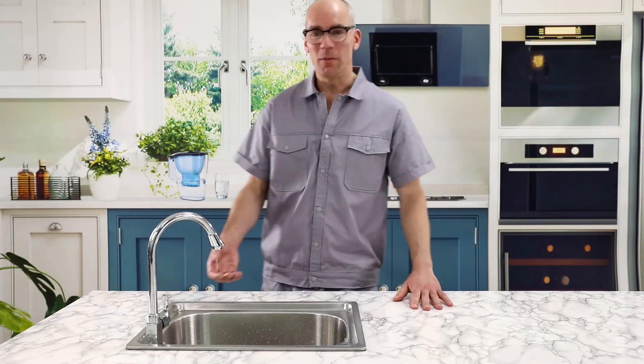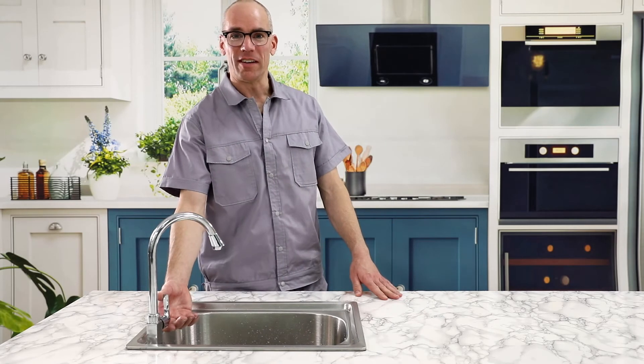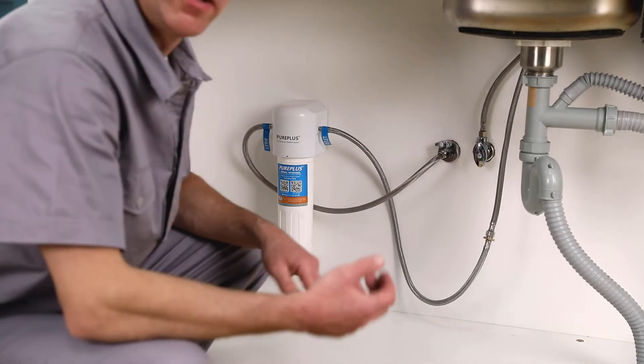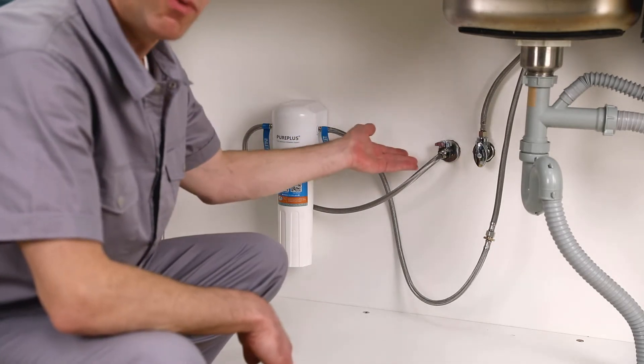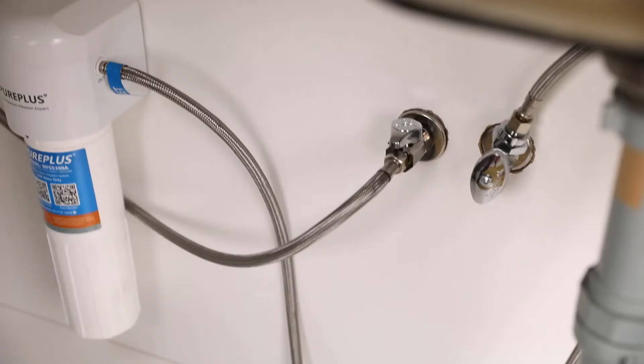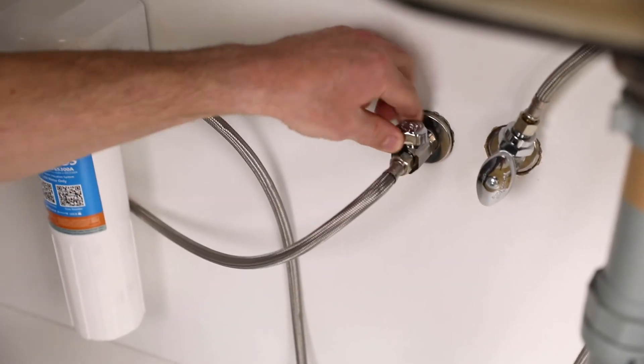Please note, it is completely normal for water to spurt out due to trapped air inside the system. Check for any possible leakage during flushing at the connections 1, 2, 3, 4, and 5. If there is any leakage, turn off the water supply.